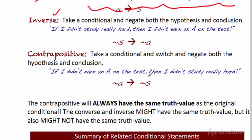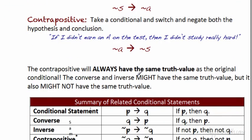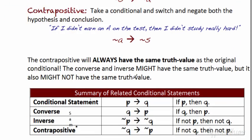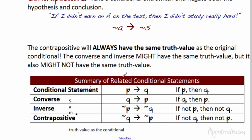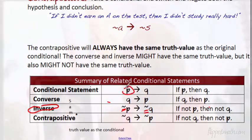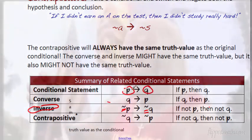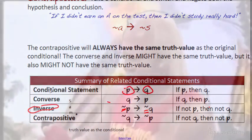Here's a summary of related conditional statements. We always start with 'if p then q.' The inverse is where you make both parts not — negating both. Mind your p's and q's.